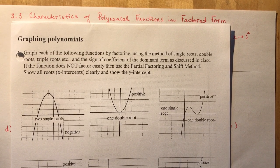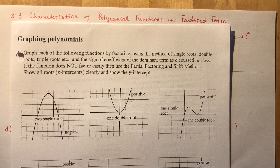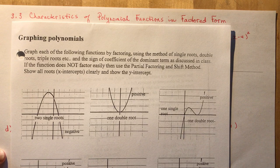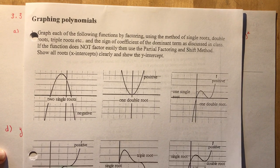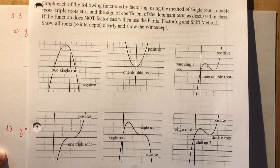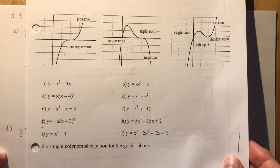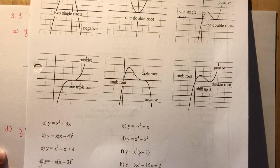Section 3.3 covers the characteristics of polynomial functions in factored form — we're going to call it graphing polynomials. If you go to my PBWiki site, I have a link there for a handout called graphing polynomials, which has all these practice ones at the bottom that I'm going to do with you.